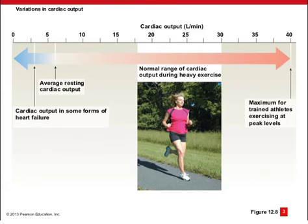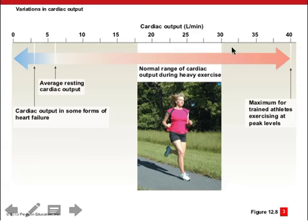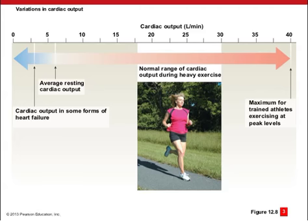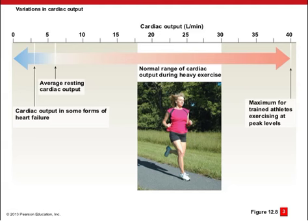Looking at the range of cardiac outputs: average resting cardiac output rises with exercise to about 30 liters per minute, and for trained athletes exercising at peak levels can reach 40 liters per minute. In a trained athlete, there's less resistance on the heart because there is literally more blood vessels in an individual with a lot of lean muscle mass, meaning the stroke volume goes up dramatically and the heart rate can increase without placing a huge burden on the heart.